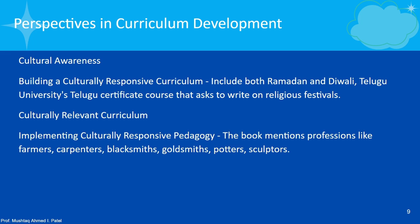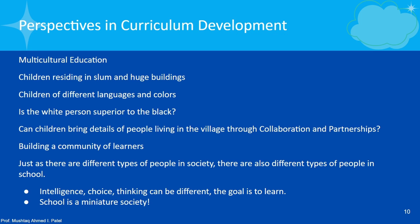The respondent may be celebrating Eid or Bakri Eid, so you give him choice to write about any religious festival. Culturally relevant curriculum says that implementing culturally responsive pedagogy means the books should mention professions like farmers, carpenters, blacksmiths, goldsmiths, potters, sculptors — remembering that children are sons or daughters of all kinds of workers. All of them are not children of government servants or teachers. So the textbook and curriculum should have various examples so that all cultures of different people are taken together.